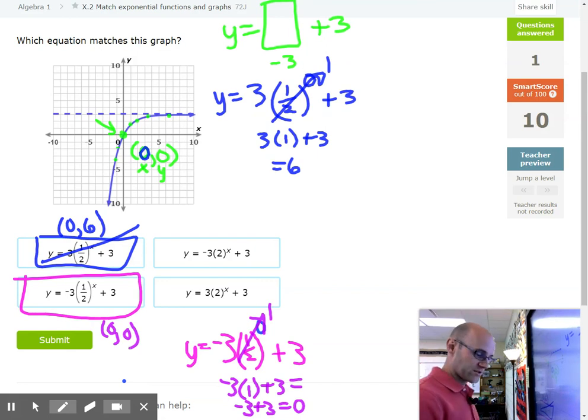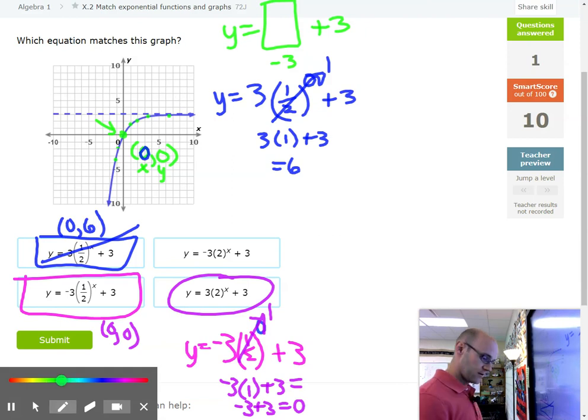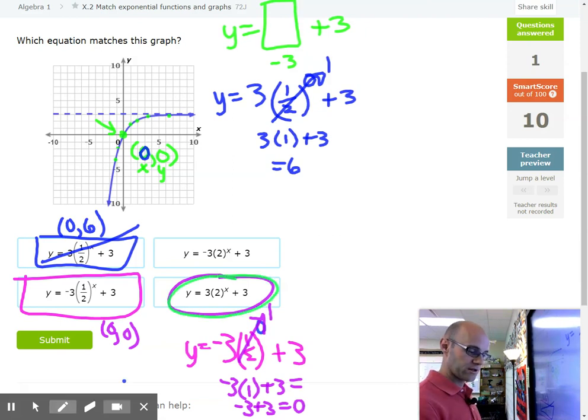I'm noticing this one down here. I'm going to do a little bit of my head now to save myself a little bit of time. If I plug in zero to this one, can you imagine you're going to get one, and one times three would be three. Three plus three would be six. This one's not going to work either.